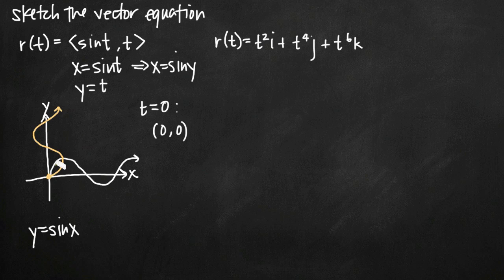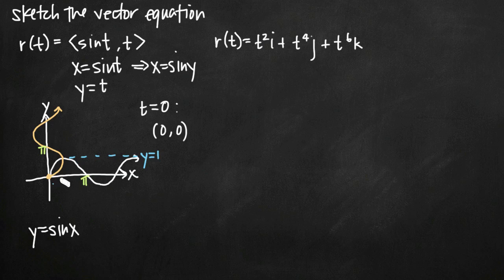Normally with y equals sine of x, the sine curve crosses the x-axis at x equals pi. When I flip my curve to x equals sine y, it's going to cross the y-axis at y equals pi — I can label that crossing point. Also, with the regular graph y equals sine x, the curve touches the line y equals 1. Similarly, my curve x equals sine y will touch the line x equals 1. That gives us a good sketch of the vector equation defined by the components sine t and t.